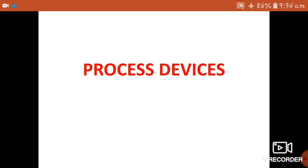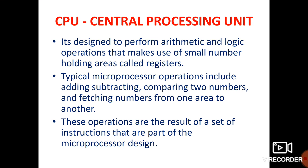You may be asked: which of the following is a processing device? For example, if the options are microprocessor, motherboard, and keyboard — keyboard is not a processing device. Microprocessor, CPU, RAM, ROM, and motherboard are all processing devices. So let's move toward Part 2 of processing devices, starting with the CPU.